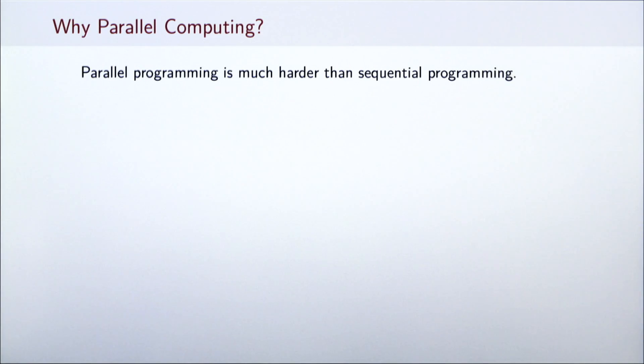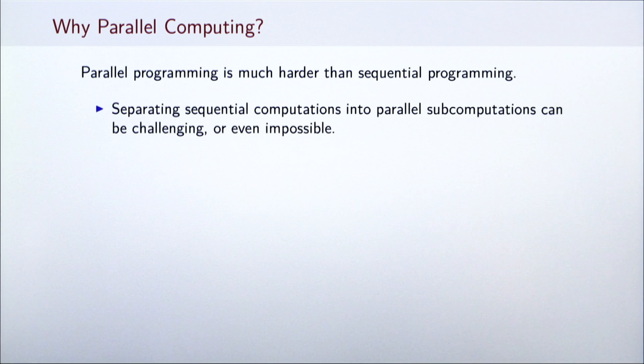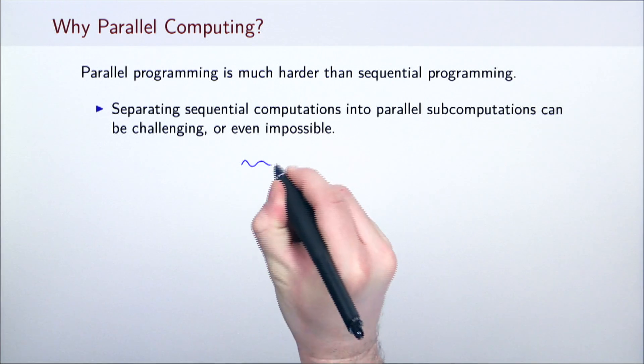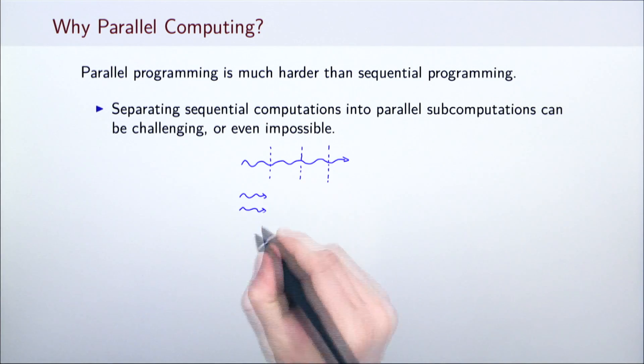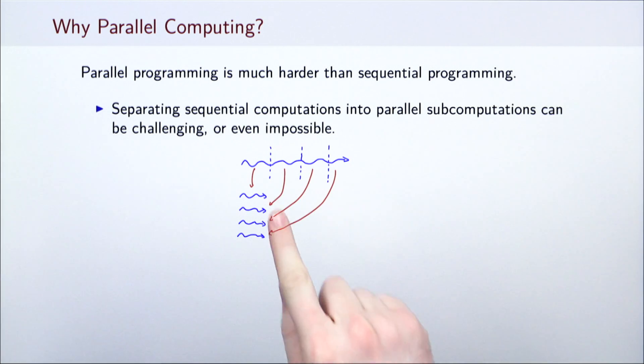This brings us to the next big question: why do we need parallel computing? As you will learn in this course, parallel programming is much harder than sequential programming. There are several reasons for this. First, separating one sequential computation into parallel subcomputation is a challenging mental task for the programmer and is sometimes not even possible. Usually this means identifying independent parts of the program and executing them at the same time. However, some problems cannot be divided as shown in this figure.